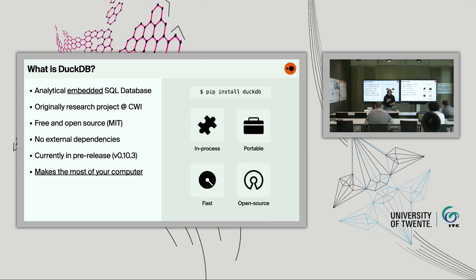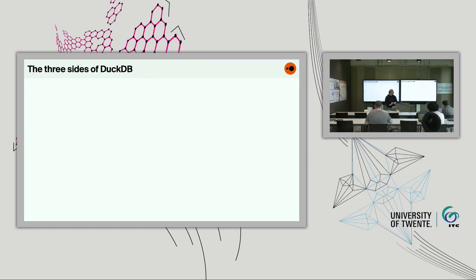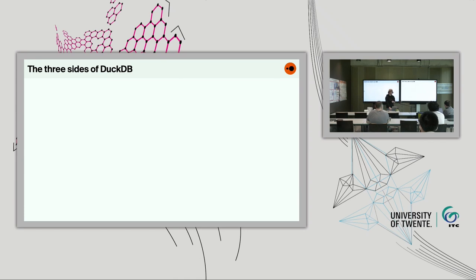Most importantly, at least for me, DuckDB makes the most out of your computer. Usually when I talk to people from a data science background, there is a bit of hesitation when I mention that DuckDB is a really fast database. People wonder why they'd want to spin up a clunky database engine when they already have notebooks, dataframes, and Python or R scripts they're used to. So let me explain why DuckDB will make efficient use of your computing resources, but also your time and patience. I'll cover three main aspects: execution, storage, and user experience.